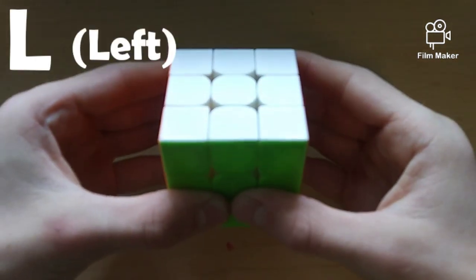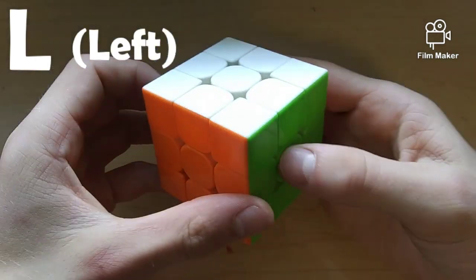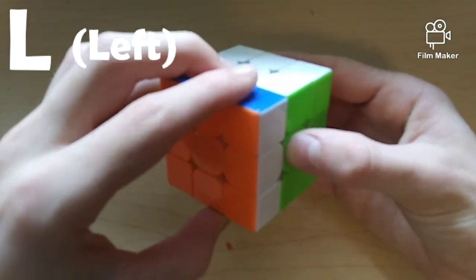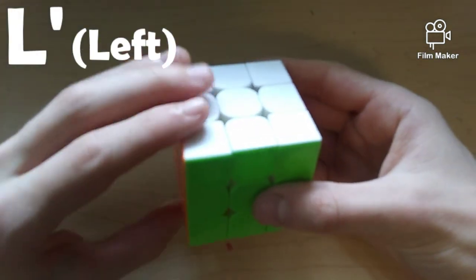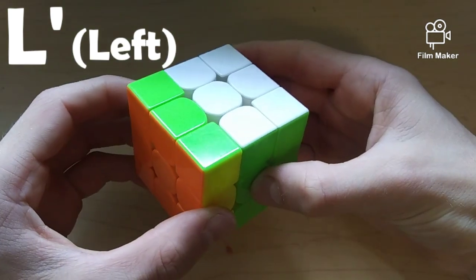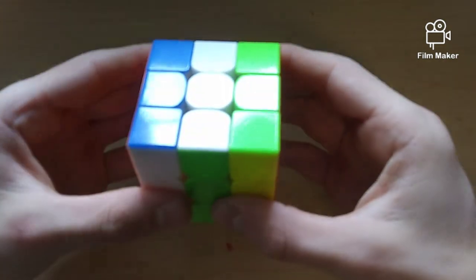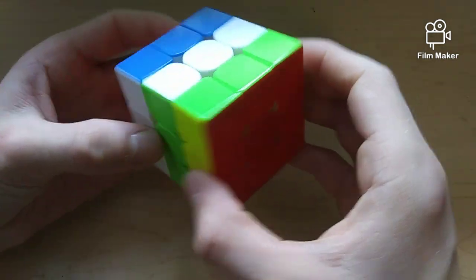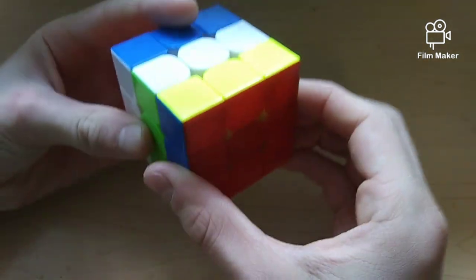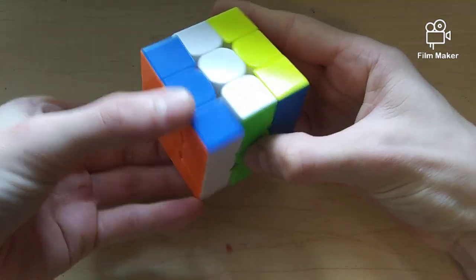Now, we will go to L, which means left. Left, you look at the left side of the cube and turn it clockwise. L' or L' will be counterclockwise. Now, a quick helpful tip. R and L are opposite directions because they are on opposite sides of the cube. R would go that way and L would come this way.